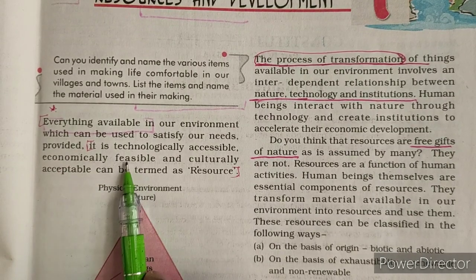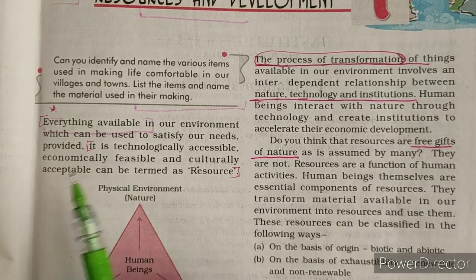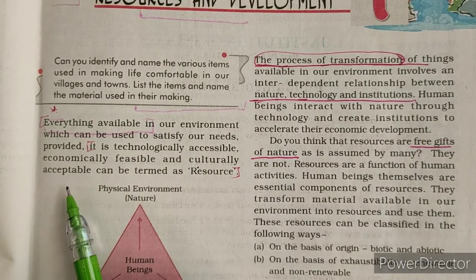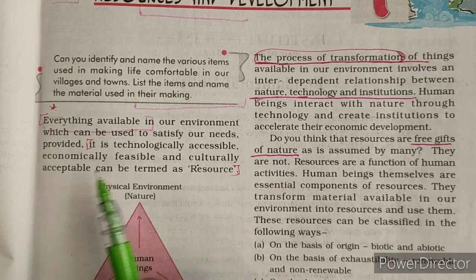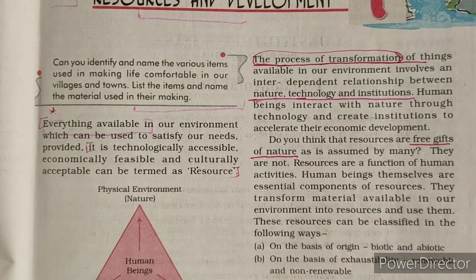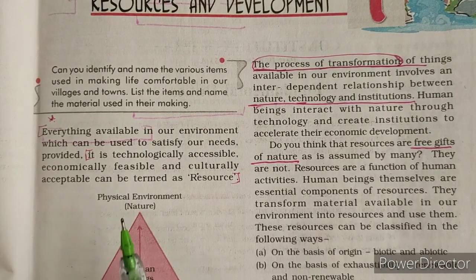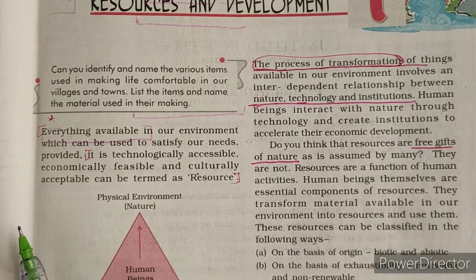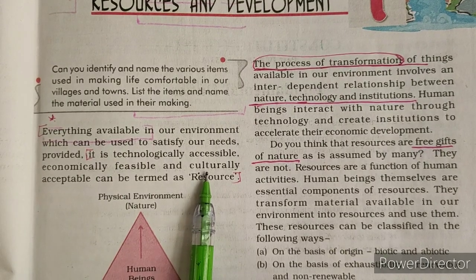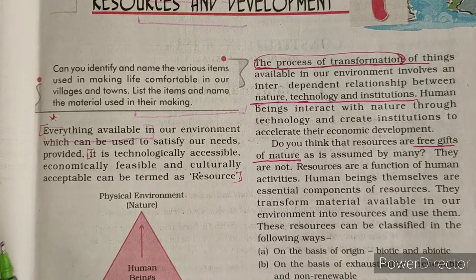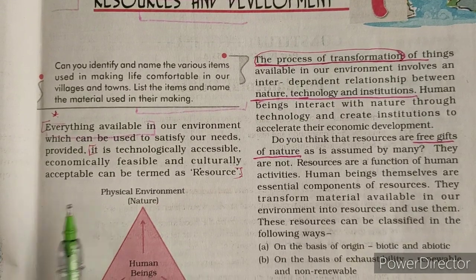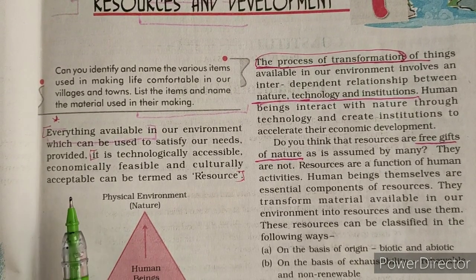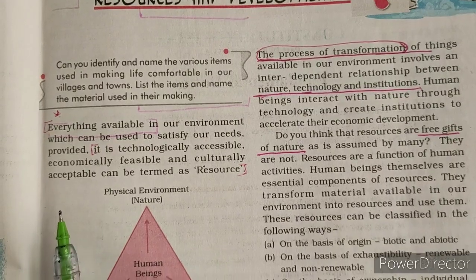Economically feasible means the resource should be economically affordable to people. And culturally acceptable — there are some resources which our culture does not accept. For example, tobacco is not acceptable in many cultures; there are people who do not produce or consume it.